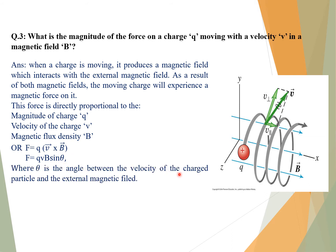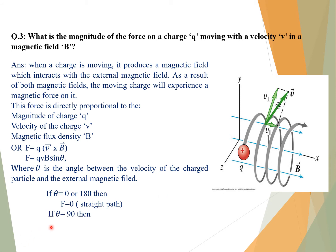Where θ is the angle between the velocity of the charged particle and the external magnetic field. If θ = 0° or 180°, then force is zero and the charged particle moves in a straight path. If θ = 90°, then force is maximum and the charged particle will move in a circular path in the magnetic field.